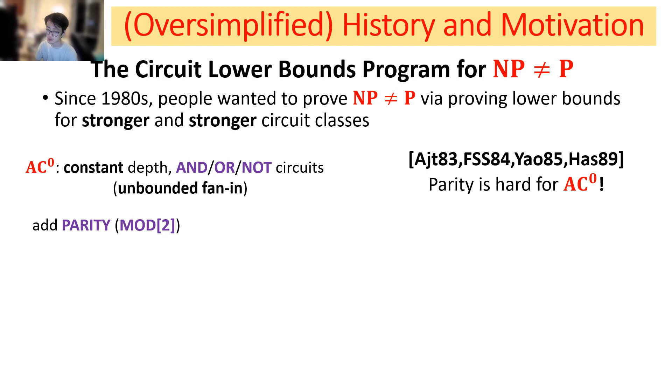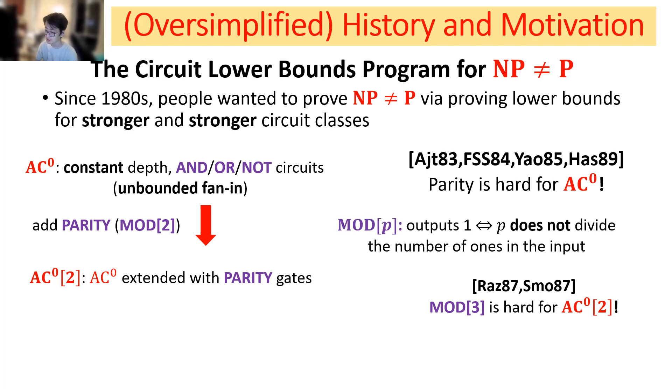A seminal line of work proves that the parity function is hard for AC^0 circuits. The next goal is to consider stronger circuit classes. People added parity into AC^0 and considered AC^0[2], which is AC^0 extended with parity gates. Then, using the polynomial method, Razborov and Smolensky proved that mod 3 is hard for AC^0[2]. Here mod p is the function which outputs 1 if and only if p does not divide the number of 1s in the input.